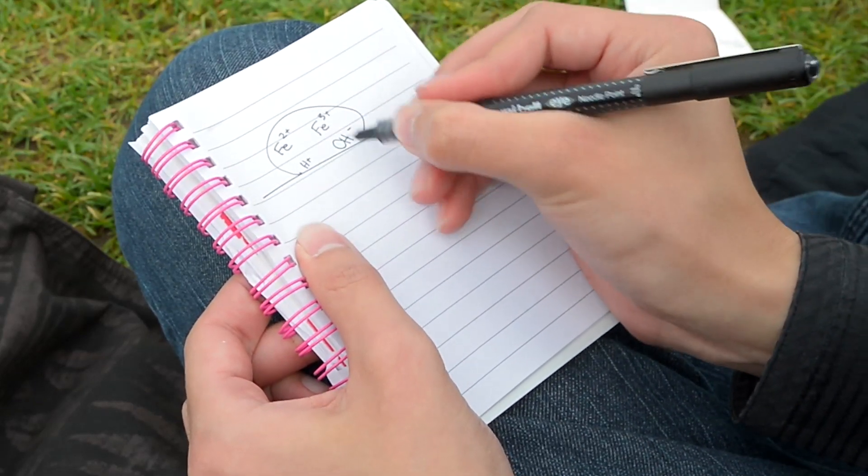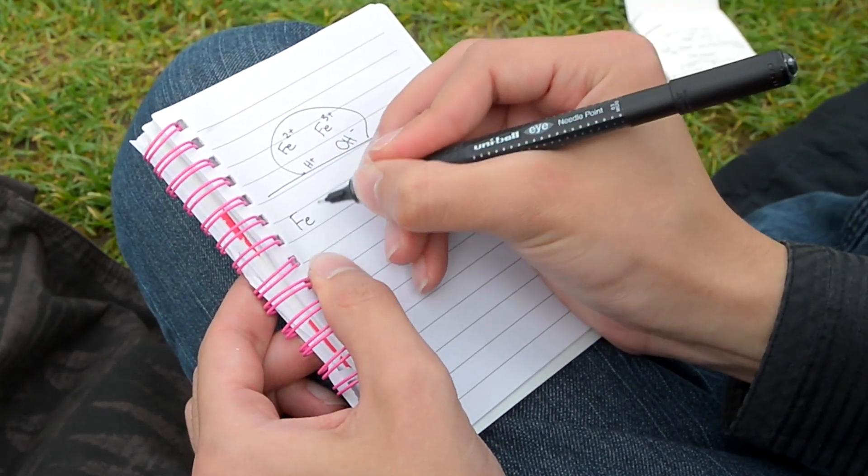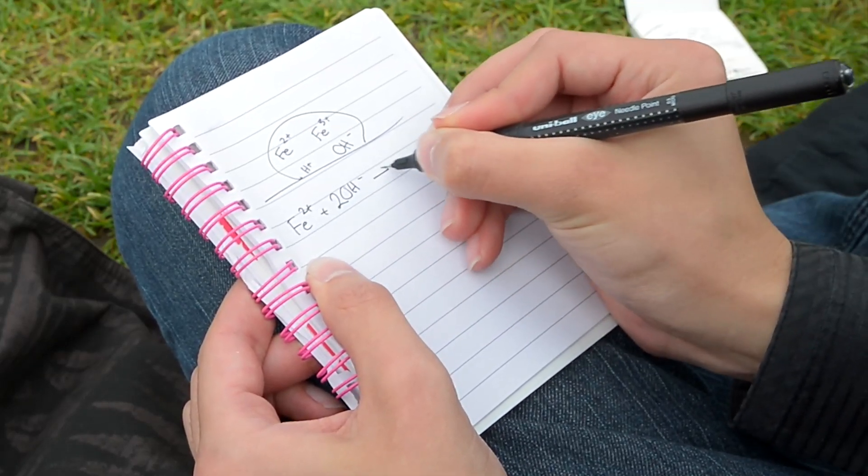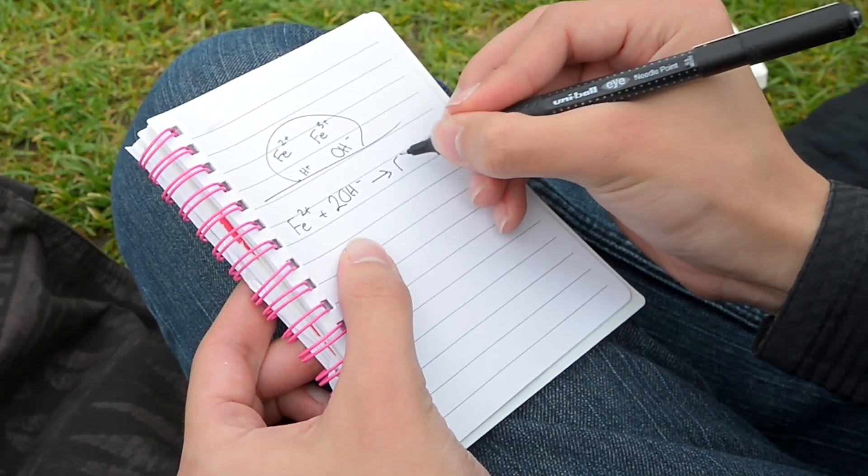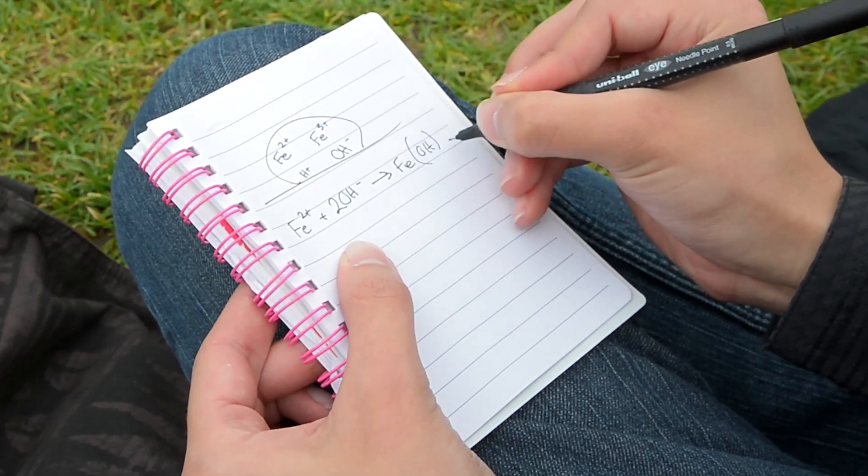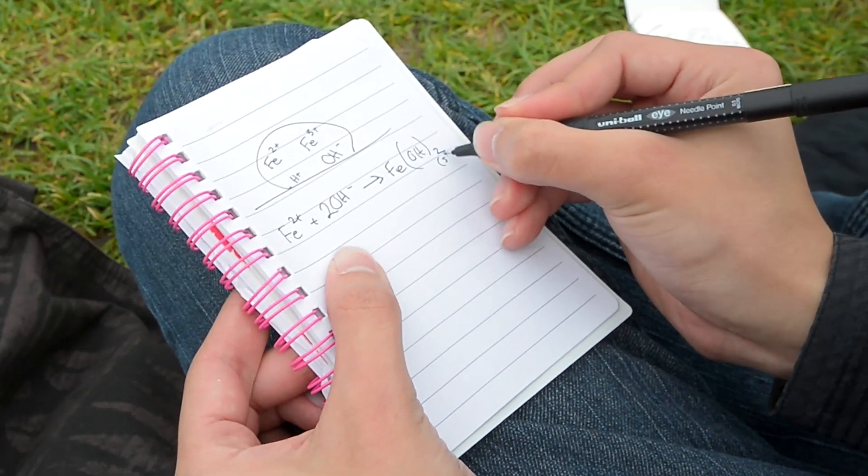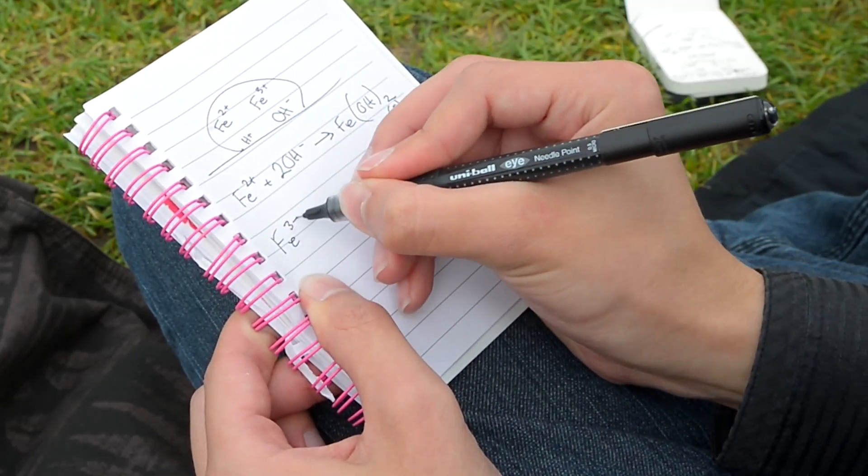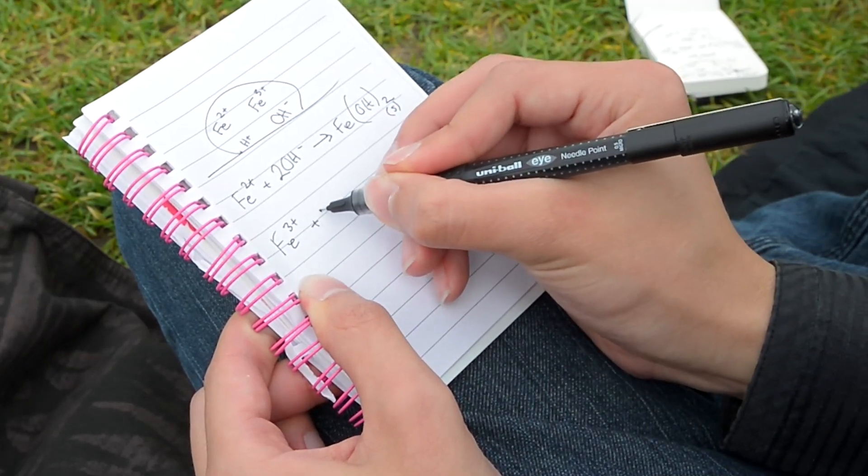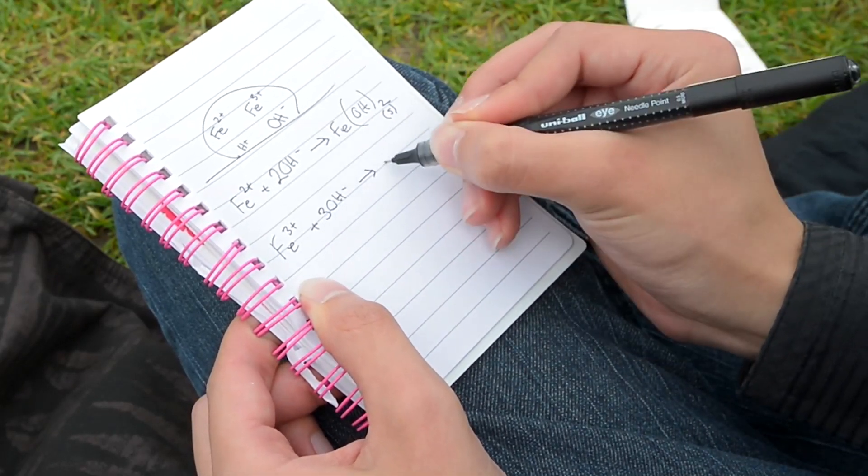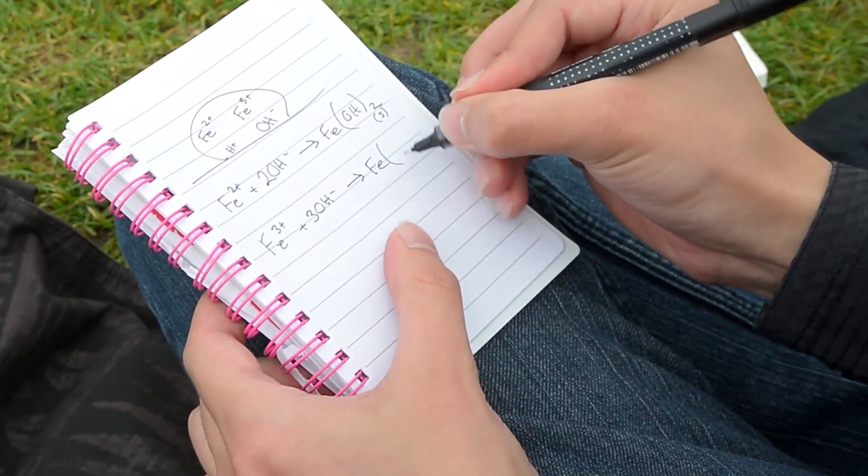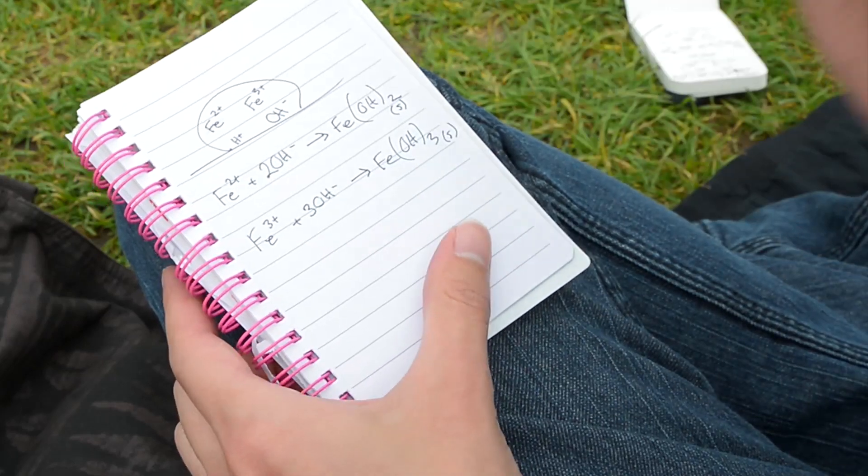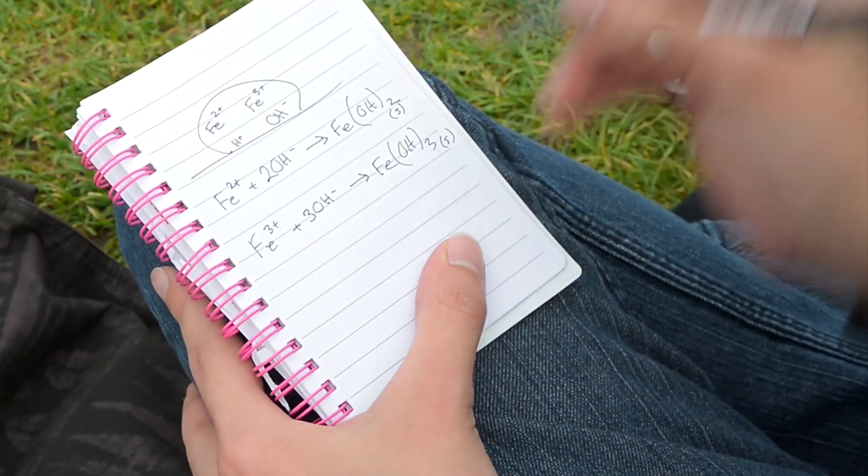So we can get iron 2 reacting with OH-, and that will form an insoluble salt here. Iron 2 hydroxide. That is a precipitate. You can also get iron 3+ reacting with 3 hydroxide ions. And you will get iron 3 hydroxide somewhat as well. Iron 3 hydroxide.